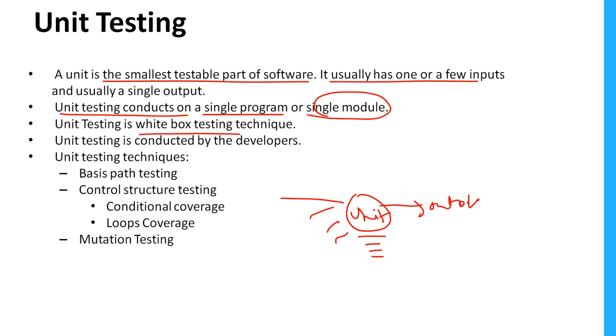This comes under white box testing technique. I told you about black box and white box in the previous video. White box testing means we can directly test the programs - we know what the developer has written internally in the code. If you test this code directly, that's called white box testing.